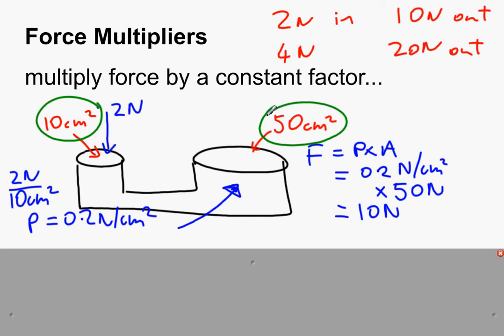So the constant factor that this system will multiply by is 5. That means, I'm not going to do the calculation, but if I then put in 4 newtons, hopefully you can see that if I put in 4 newtons, the pressure will double, therefore the pressure that goes into this equation will double, therefore the force will double.